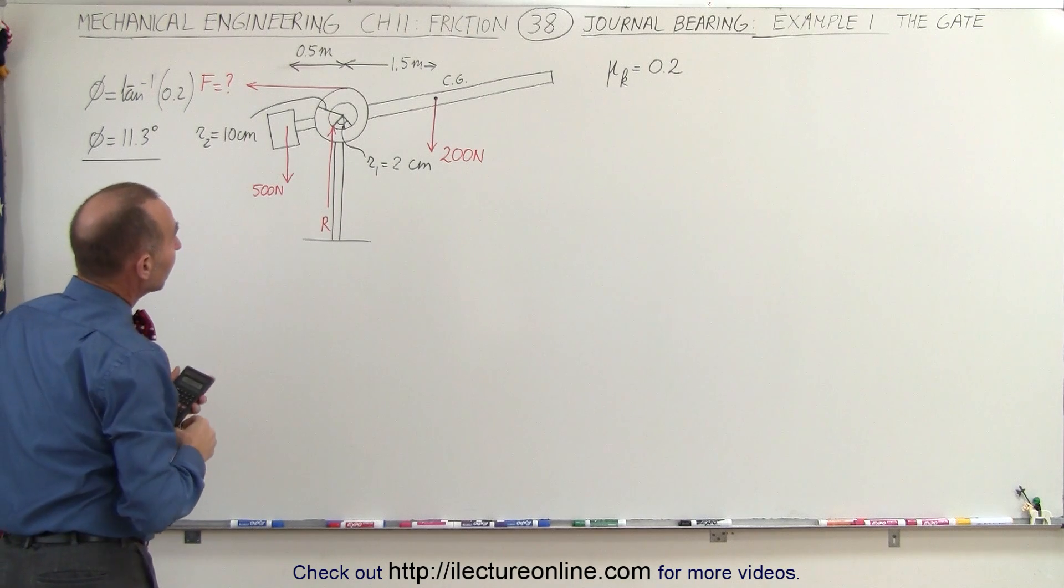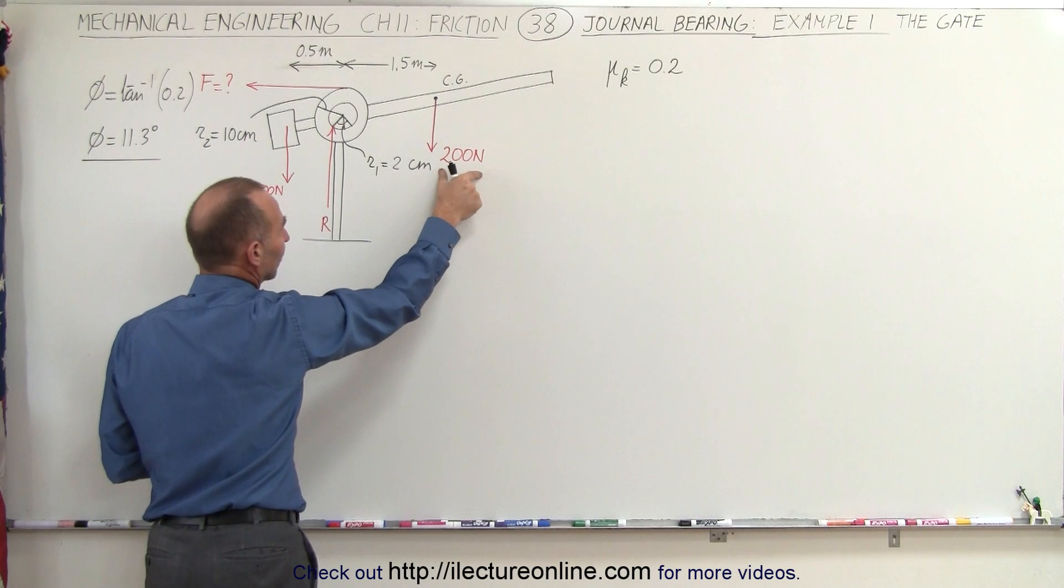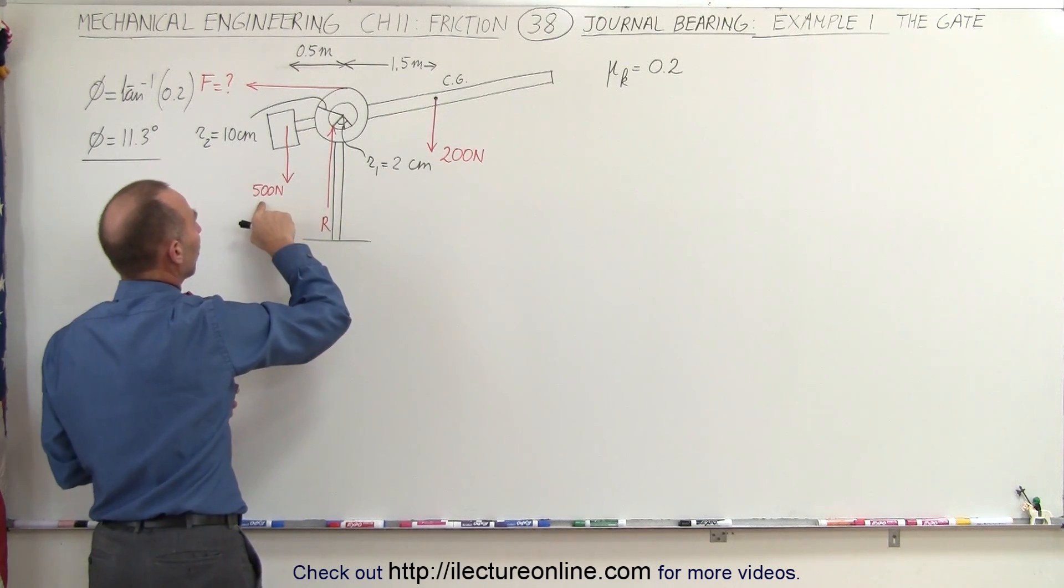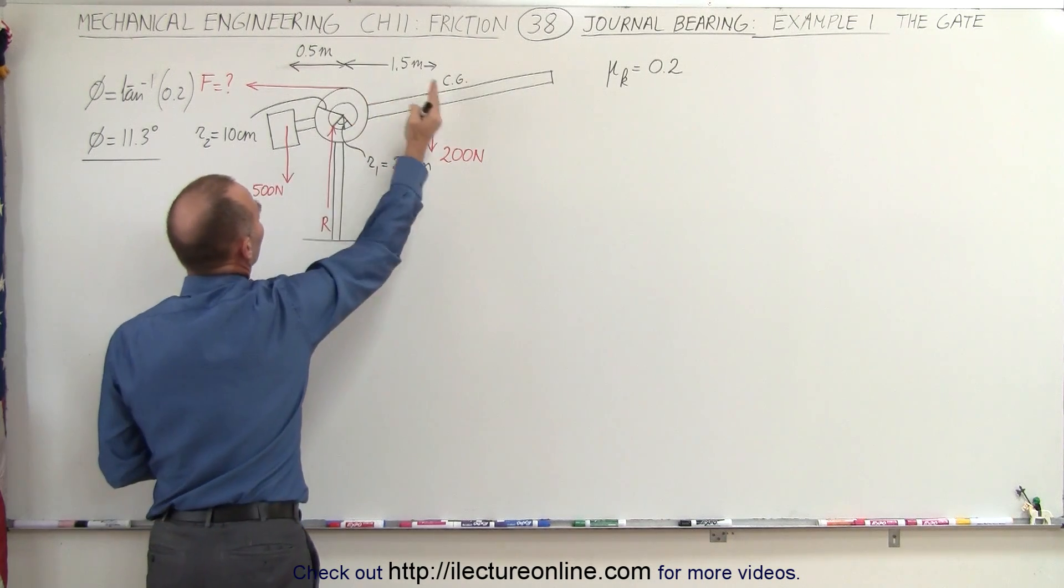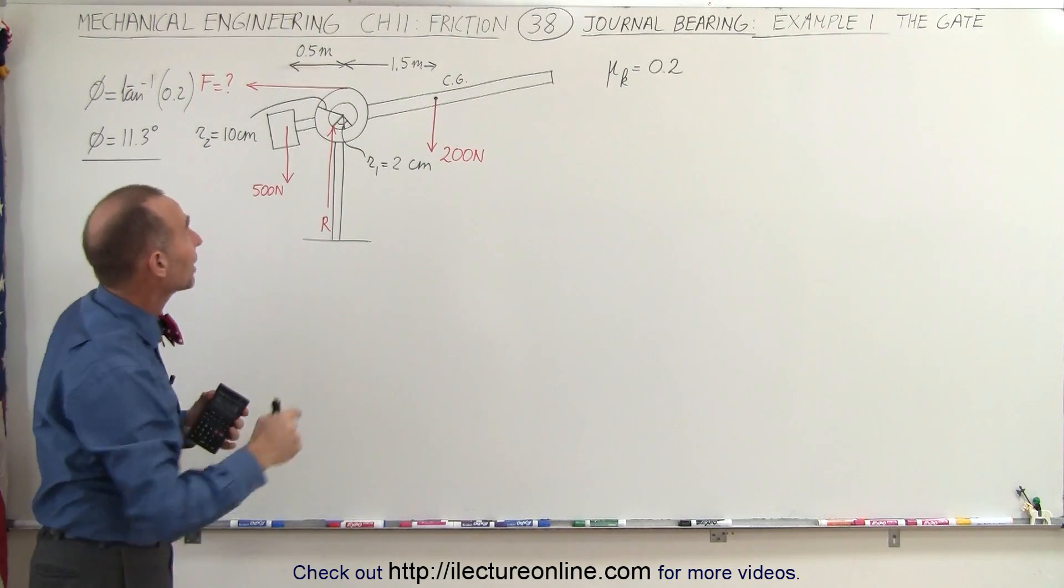Now notice we have the gate itself, we have the counterweight. The gate has a weight of 200 newtons, the counterweight a weight of 500 newtons. You can see where the positions are of the center gravities.